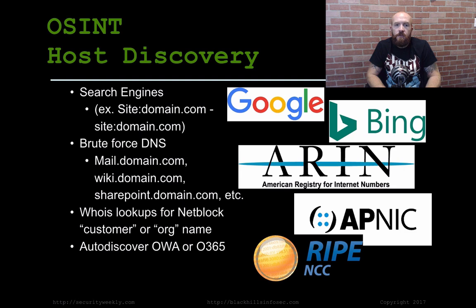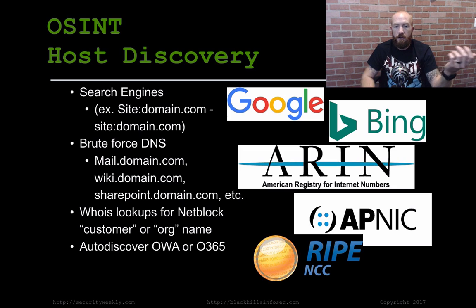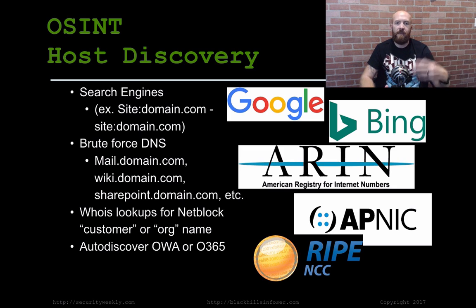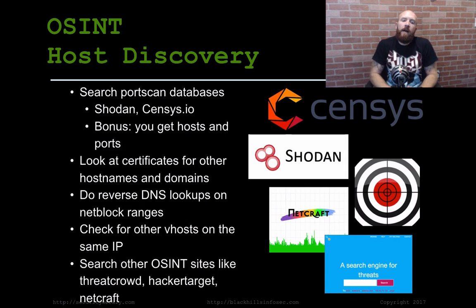Another thing I find very useful is to find mail servers, and a lot of times you can auto-discover those. A lot of times organizations set up DNS so that if you do autodiscover.domain.com, it'll point to their mail server somewhere, which is either an on-premises server or O365. Yes, there are other mail servers out there, but that's something a lot of organizations use.